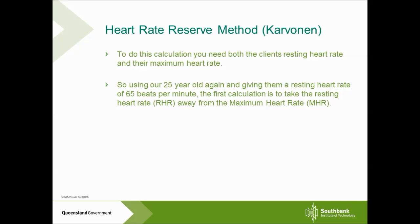Using our second method, the heart rate reserve or Karvonen method, we need two pieces of information: the client's maximum heart rate and their resting heart rate. Taking our 25-year-old again and estimating their resting heart rate is 65 beats per minute, the first part of the calculation is taking their resting heart rate away from their maximum heart rate — 195 minus 65 gives us the heart rate reserve, which is 130 beats per minute.